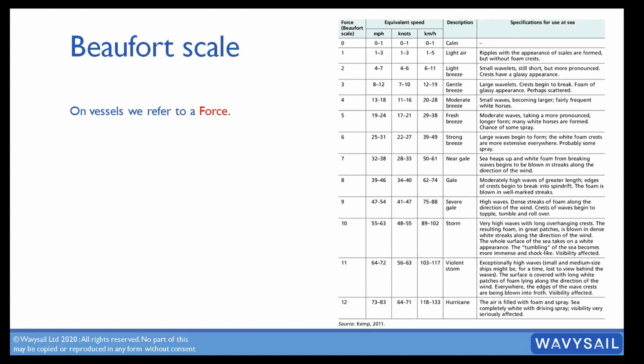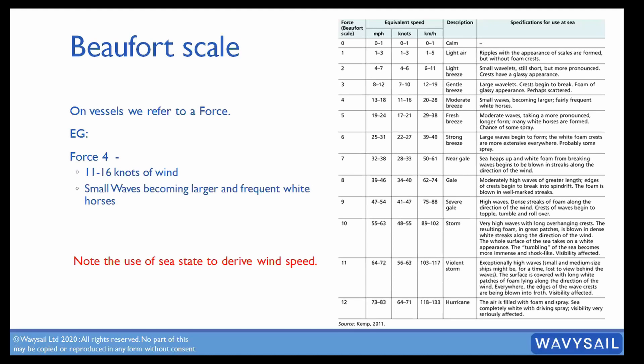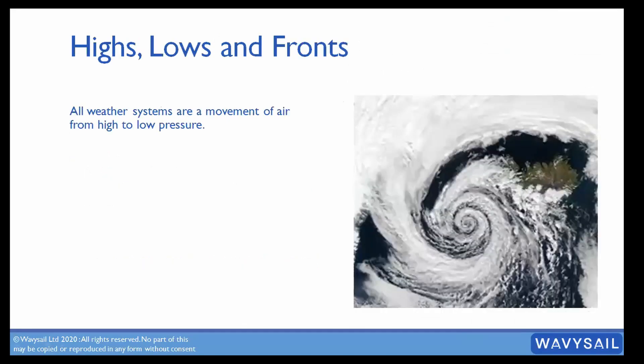The wind is going to gust up and down, so we always talk about a force — for example force four — which means the wind's blowing between 11 and 16 knots. Small waves becoming larger, frequent white horses — that's what the sea will look like. The sea state is how we derive it. When you want to learn your Beaufort force, learn what the sea state looks like and that will give you your wind speed.